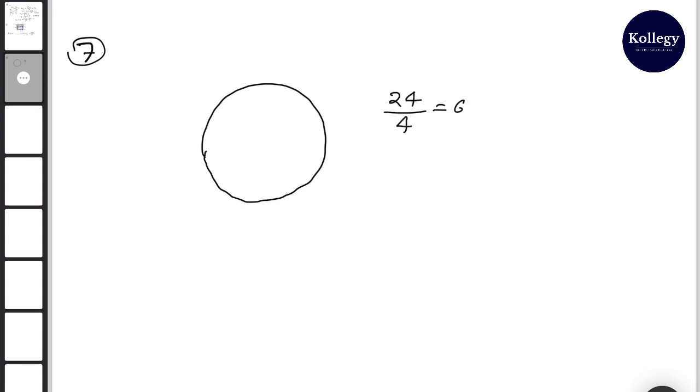So in one quarter, how many points do we have? 6 points. 6, 12, 18, 24.